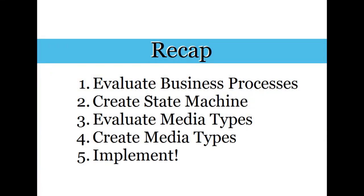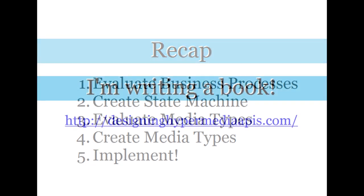So as a recap, evaluate your business process. Figure out what your API needs to do. Step two, make a state machine that represents that business process and all the steps. Step three, figure out from that state machine what kinds of hypermedia things you need. Step four, create or figure out if an existing type is useful to you. And then step five, build it.